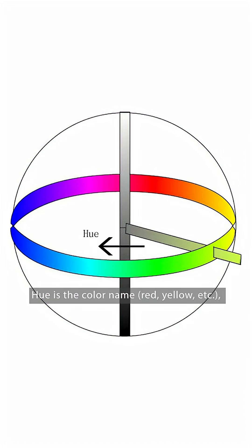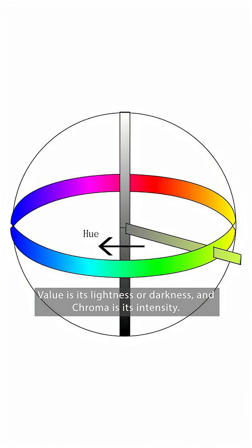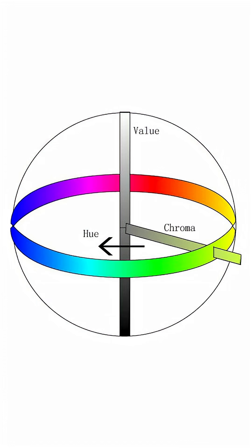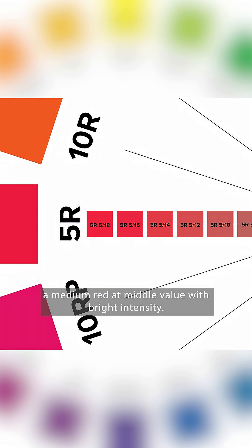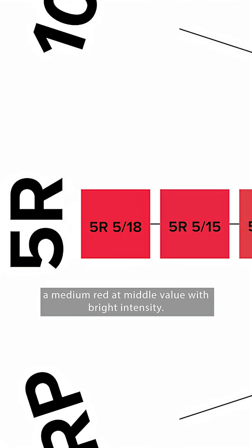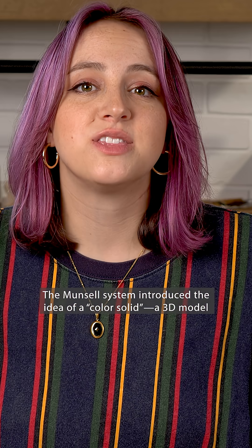Hue is the color name — so red, yellow, etc. Value is its lightness or darkness, and chroma is its intensity. For example, 5R 5/8 describes a medium red at a middle value with bright intensity.